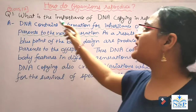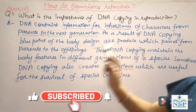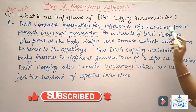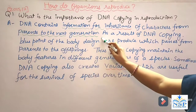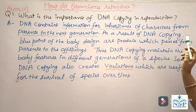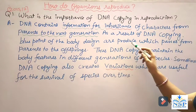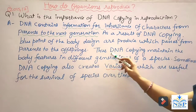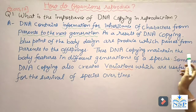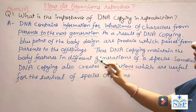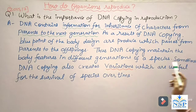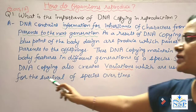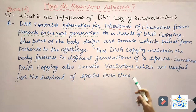Our first question is: what is the importance of DNA copying in reproduction? DNA contains information for inheritance of characters from parents to the next generation. As a result of DNA copying, blueprints of the body design are produced which pass from parents to the offspring. Thus, DNA copying maintains body features across different generations of our species. Sometimes, DNA copying also creates variations which are useful for the survival of species over time.